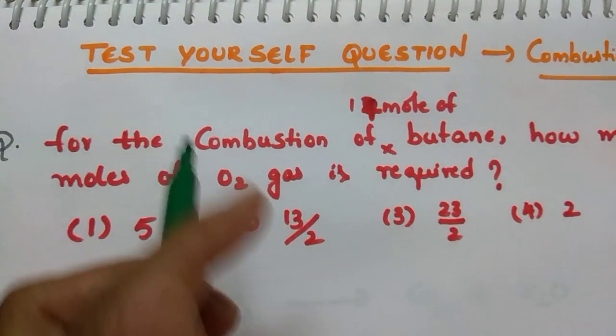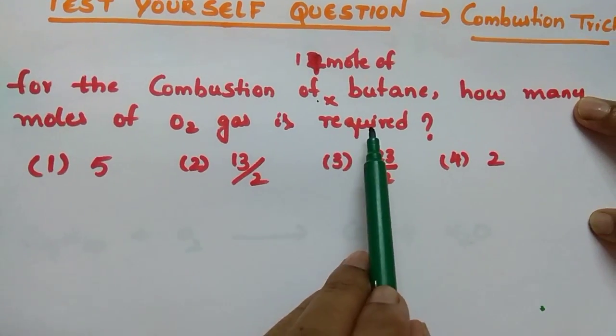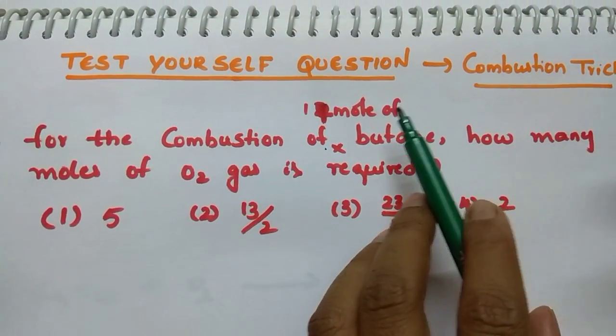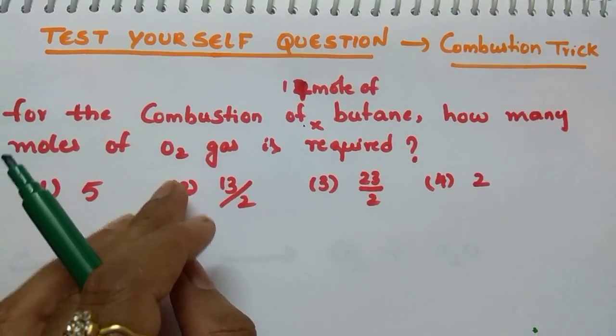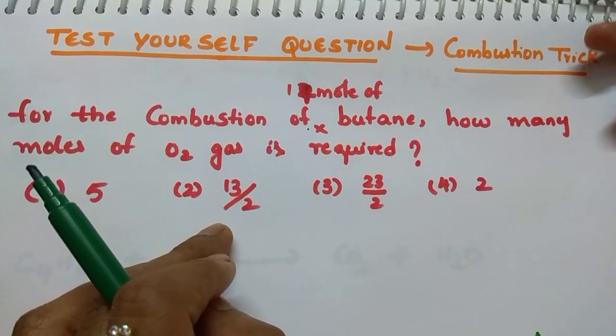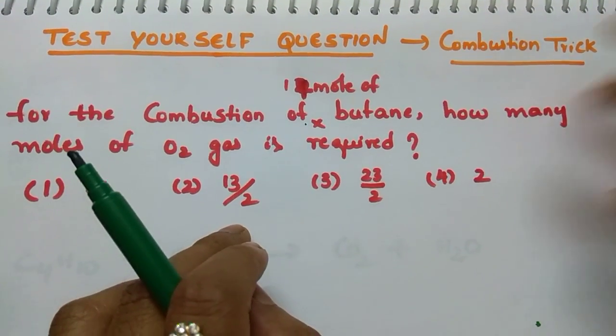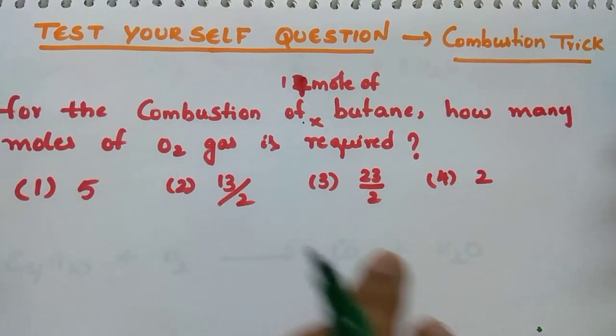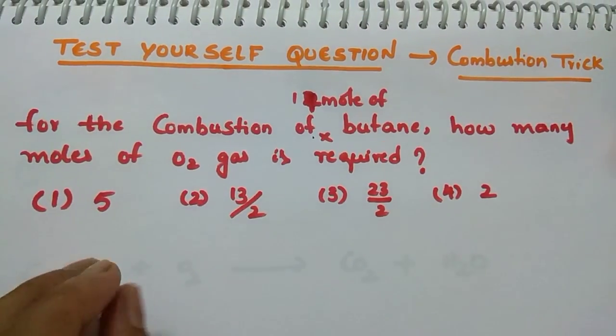Let us see the question: for the combustion of one mole of butane, how many moles of O2 gas is required? Here I asked you mole-mole relationship. Sometimes they may ask you: one mole of butane, how many liters of O2 gas is required? From moles relation you can calculate volume. From mole relation you can calculate mass also. This trick is useful for you to solve questions from mole concept as well as from hydrocarbons. This is a very small trick but which makes you do the easiest questions.